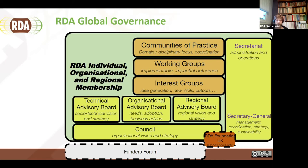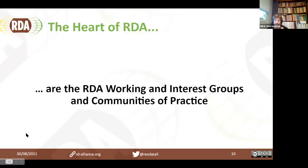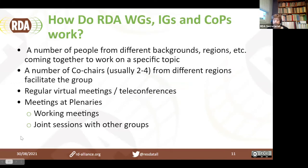I'll talk a bit about how the Research Data Alliance works and introduce you to working in interest groups and communities of practice. As Hilary said, the heart of RDA are the RDA groups that do the work. We have three different types: working groups, interest groups, and a relatively recent addition — communities of practice. The general idea for all of them is that they bring together a group of experts from different backgrounds and regions to work on a specific topic.